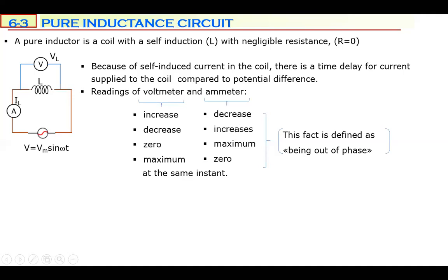The reason for this time delay is the self-induction of the coil — this is not detailed in your book as it may be hard to grasp, so you don't need to know it. But the reason for this time delay between potential difference and electric current is the self-induction. This difference in readings is defined as being 'out of phase.'